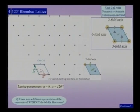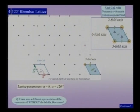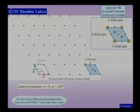The fourth lattice we consider is the 120-degree rhombus lattice. As you can see, it is not just any rhombus, but a rhombus with an included angle of 120 degrees. The lattice translation vectors A and B have an included angle of 120 degrees, and the lattice parameters are A equal to B — which is why it is called a rhombus — and the included angle alpha is equal to 120 degrees.